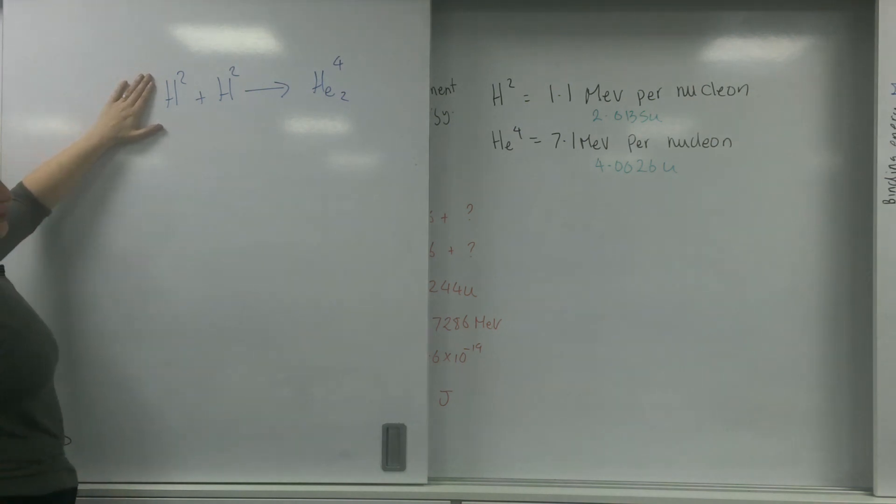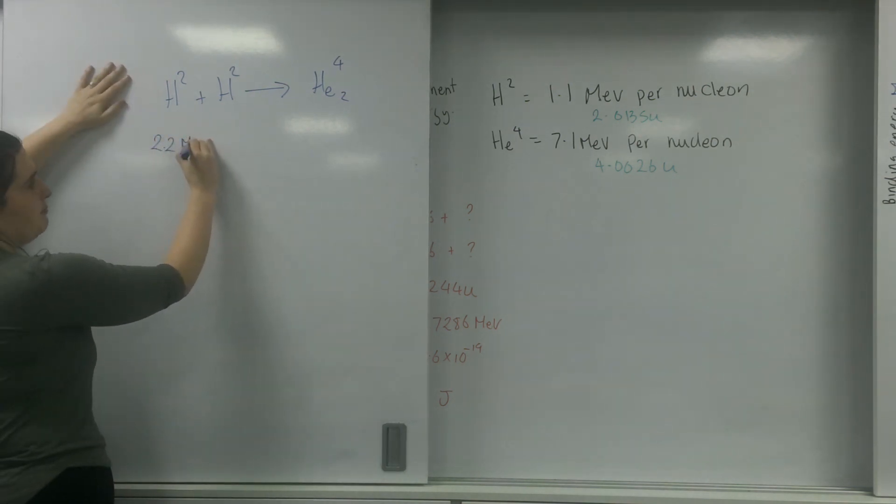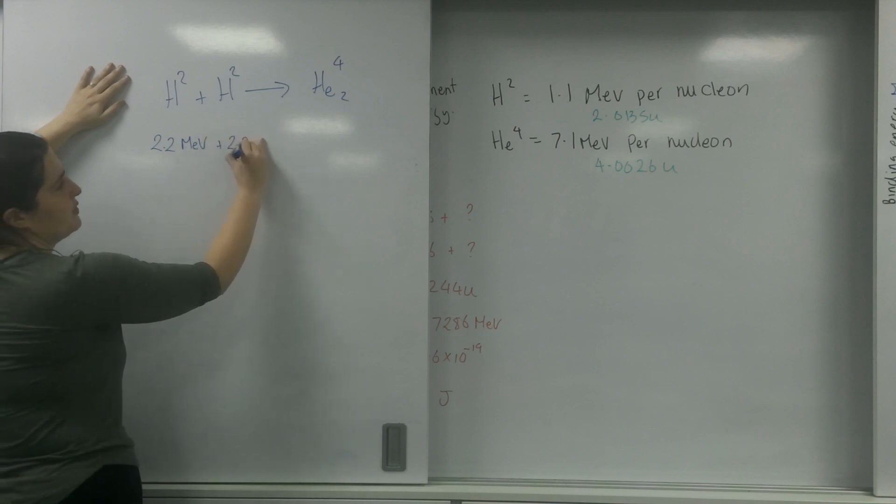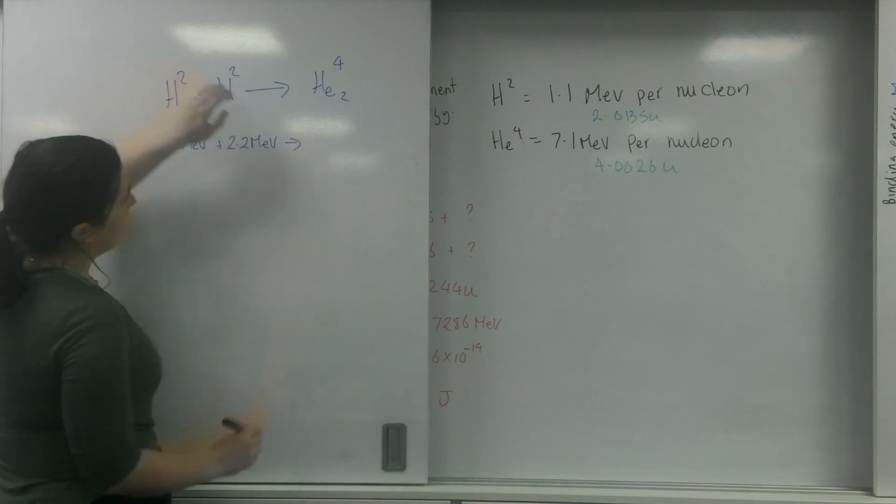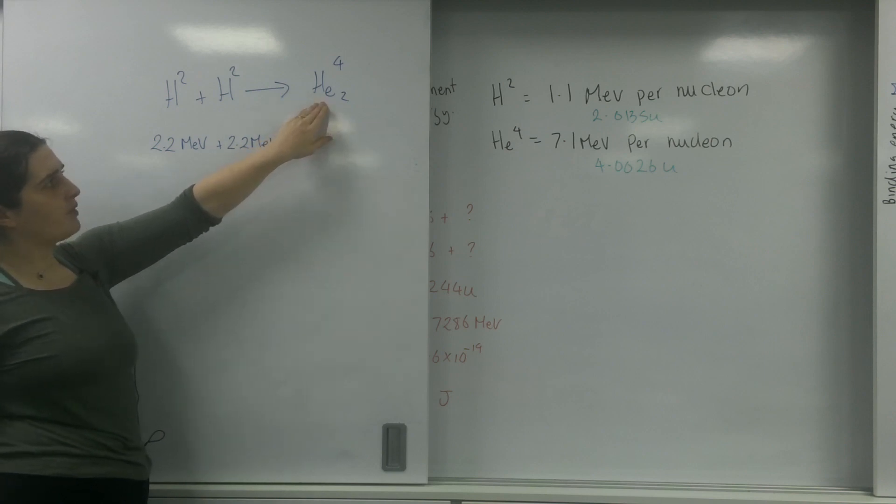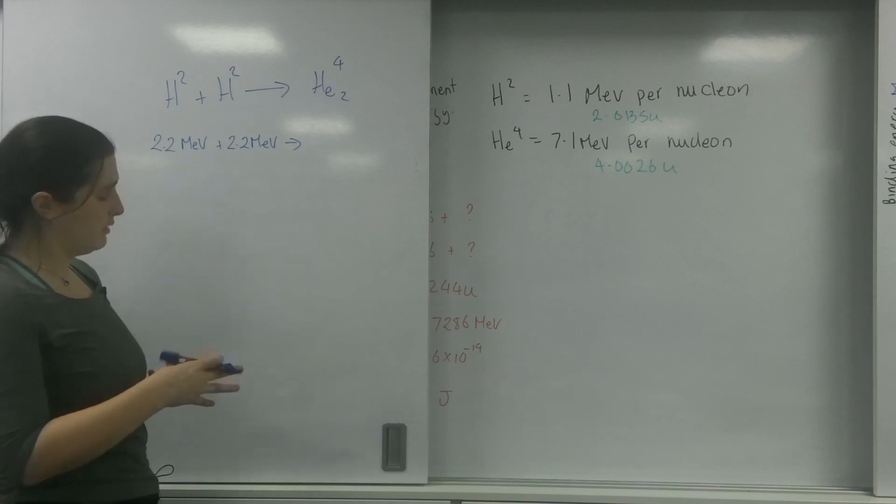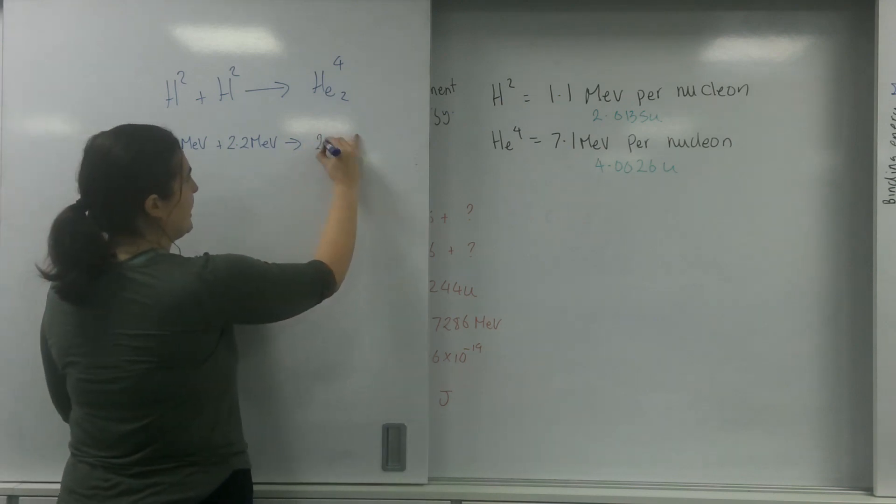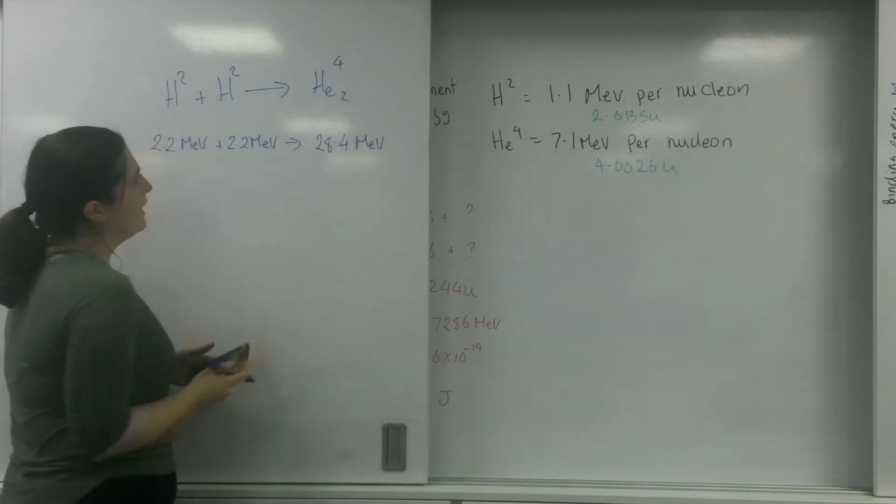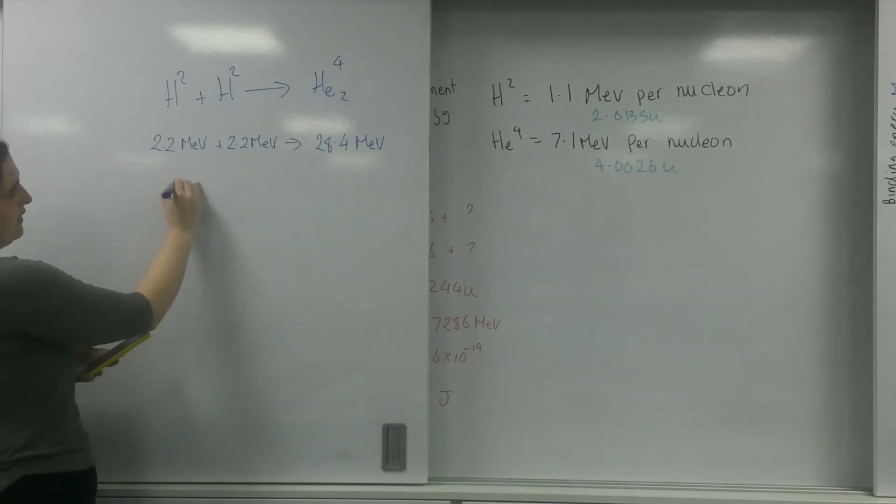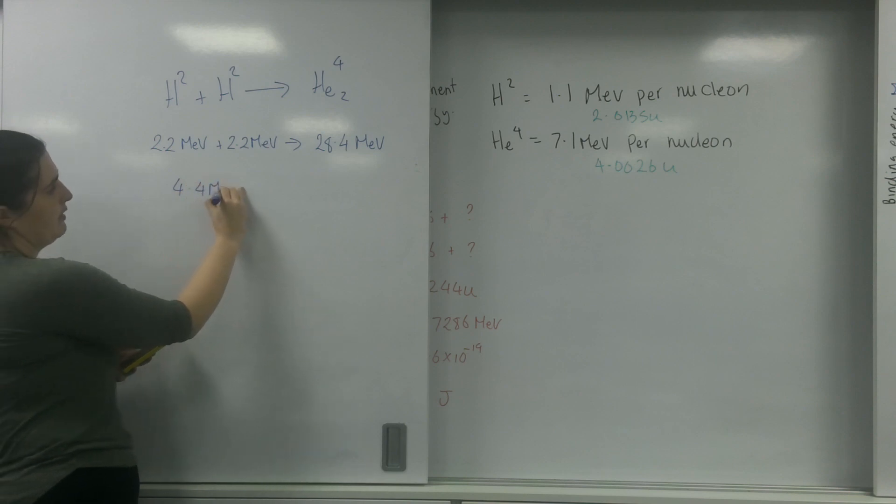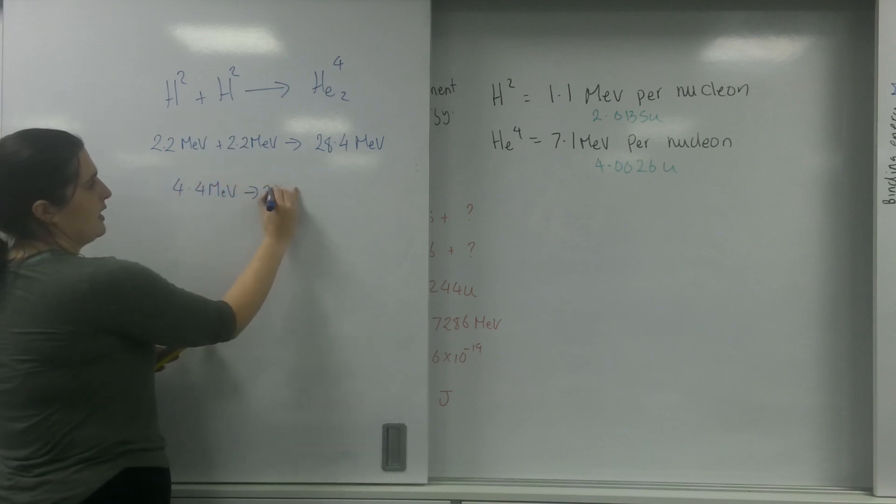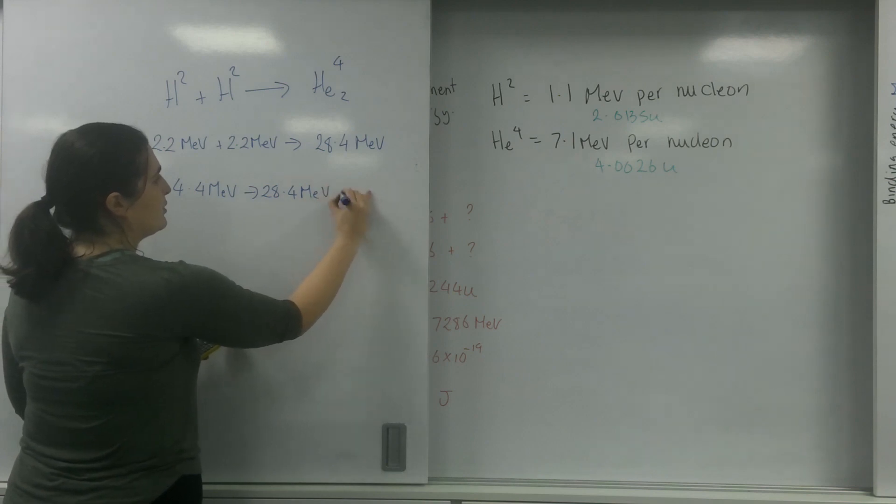So I have got two nucleons in this one. So I'm going to have 2.2 MEV here. Plus 2.2 MEV goes to, this is important, I have helium. I have four nucleons. So I'm going to have to have 4 times 7.1. So 4 times 7.1 is 28.4 MEV. And as you can see, if I sort out this side, I have 4.4 MEV goes to 28.4 MEV.